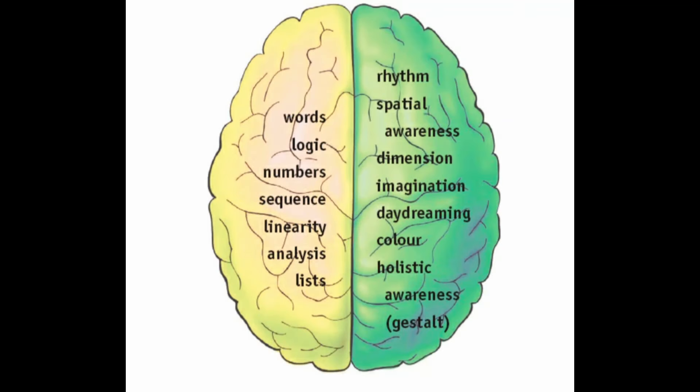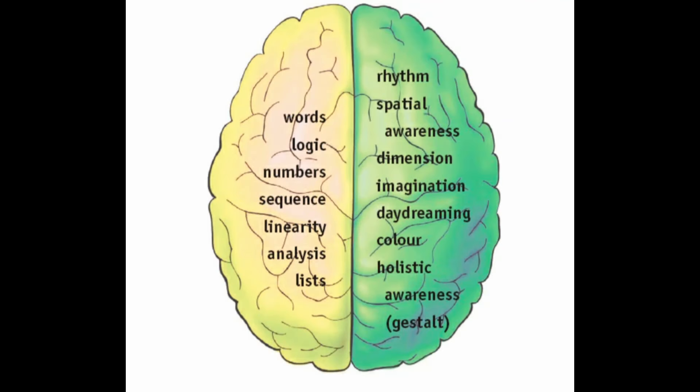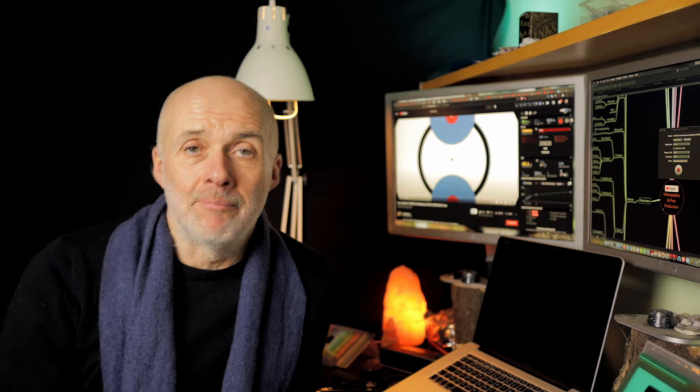You've got two sides to your brain. The left side controls the right side of your body and the right side controls the left side, and they do very different things. The left side is responsible for logic, numbers, sequence, analysis, words, and language. The right side of your brain is responsible for spatial awareness, imagination, color, rhythm, tempo, holistic thinking, daydreaming, and dimension.